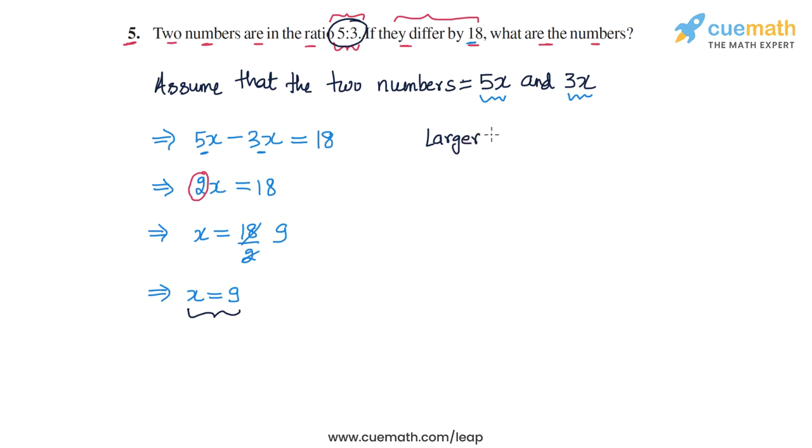So the larger number is equal to 5x or 5 into 9. 5 into 9 is 45. And the smaller number is 3x. And 3x will be equal to 3 into 9 or 27. So the two numbers are 45 and 27.